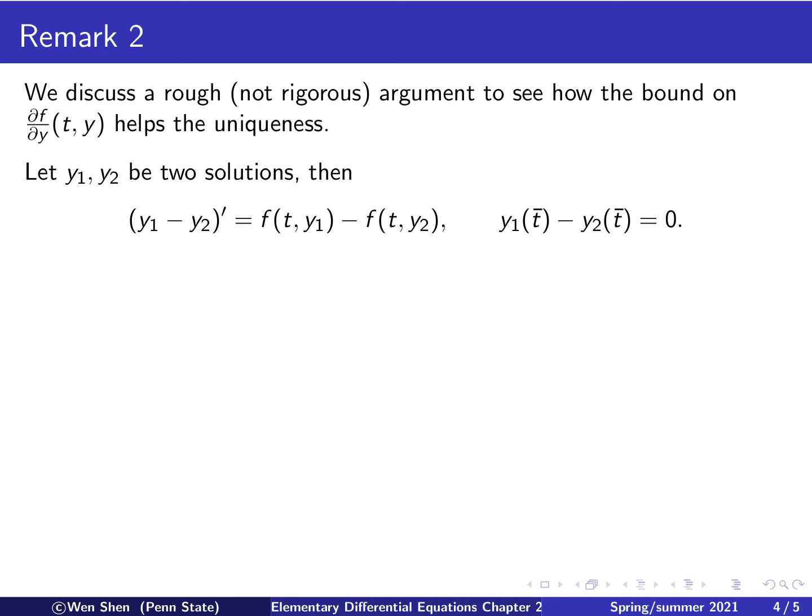I can subtract the two equations and have the equation for the difference. y1 minus y2 prime will be y1 prime minus y2 prime, which is the function f at y1 and the function f at y2. Also, the initial condition for the difference now is zero. Since the left-hand side is a complete derivative, I can integrate both equations and use the initial condition that at t bar it's zero. Then this quantity will be the integral from t bar to t. Since I use t as the variable, I change the variable of integration into s. So wherever I had t now is changed into s.